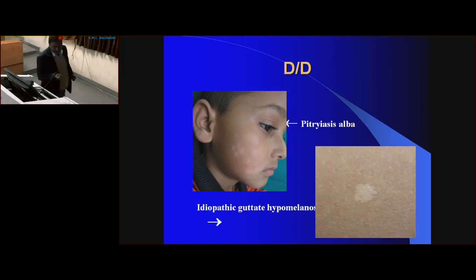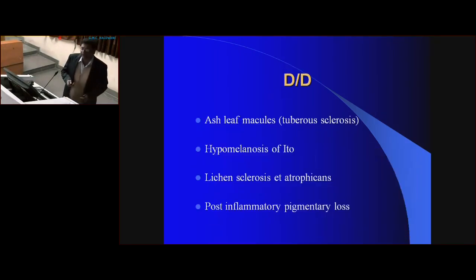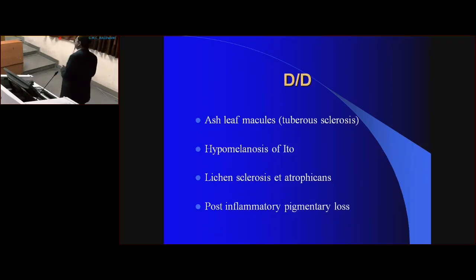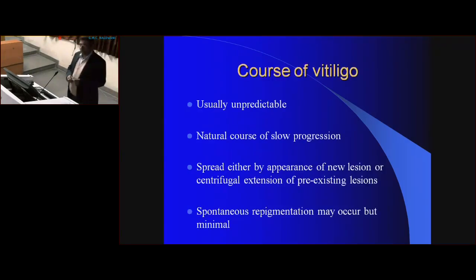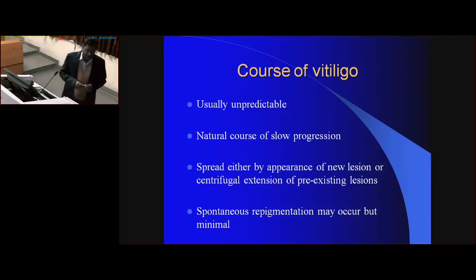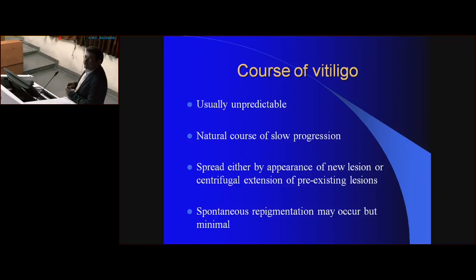Other differential diagnoses include ash leaf macules in tuberous sclerosis, which are depigmented. The course of vitiligo is unpredictable. The natural course is of slow progression. The spread of lesions can occur either by the appearance of new lesions or by extension of existing depigmented macules.